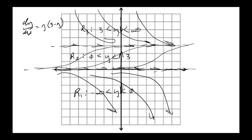Homework for Section 2.1 on direction fields: any of the odd-numbered problems that are answered in the back — problems 1 or 3, then 5 through 11, 13, and 15 if they're in the back. For Section 2.2 on autonomous first order differential equations: problem 19 if it's in the back, any odds from 21 to 27 if they're in the back, and 29 if it's in the back.